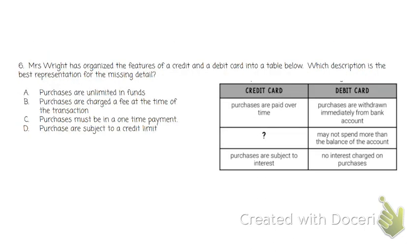Number six: Mrs. Wright organized the features of a credit card and debit card into a table. Which description best fits the missing detail? We want to know which one represents a credit card. A says purchases are unlimited in funds — no, there is a credit limit based on your credit score. B says purchases are charged a fee at the time of the transaction — no, they don't charge you an extra fee right when you use your credit card; it's every month that you don't have it paid off. C says purchases must be in a one-time payment — no, you can purchase often and pay it back a little each month. D says purchases are subject to a credit limit — yes, if you have a credit card with a $500 credit limit, you can only spend $500 or it will be declined.